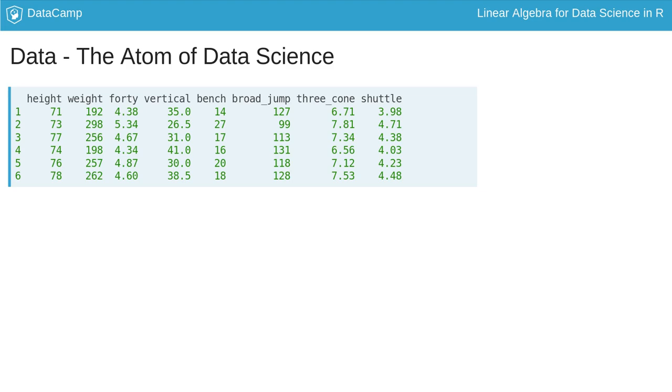Here I'm looking at the first few rows of a data set which has athletic data for players entering the National Football League draft. This data set has one case in each row, player with name omitted, and one feature or variable, like height, in each column.